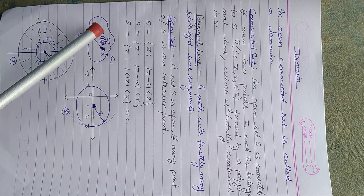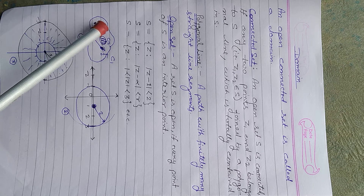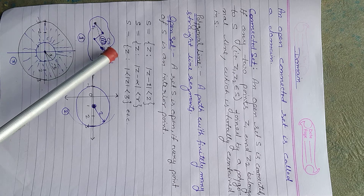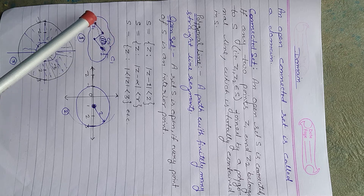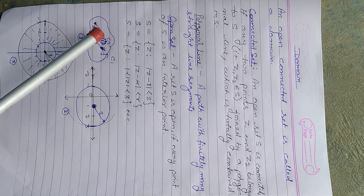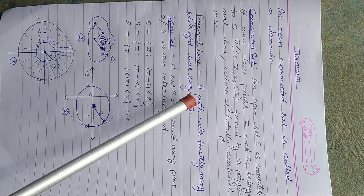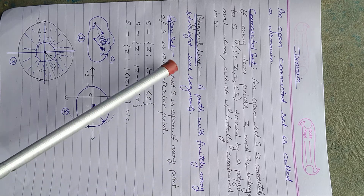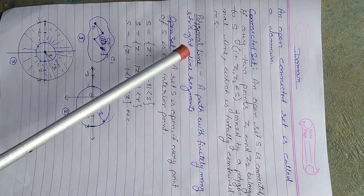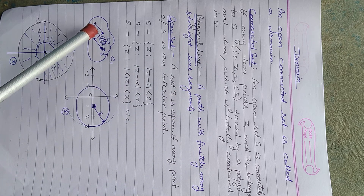So we can join the points by more than one line — a first line, second line, and third line from z1 to z2. These multiple line segments together are known as a polygonal line. A path consisting of finitely many straight line segments is known as a polygonal line.